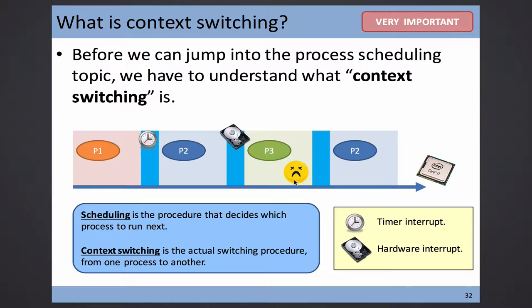The clock tells the kernel, because the kernel is the driver there — hardware comes in and it's always the driver to pick it up. The kernel decides what to do: they can ignore it, or they can handle it. For example, if process P1 has been running long enough — say five milliseconds — after five heartbeat signals, the scheduler decides it's time for P1 to go, and steps in to choose another process to run.